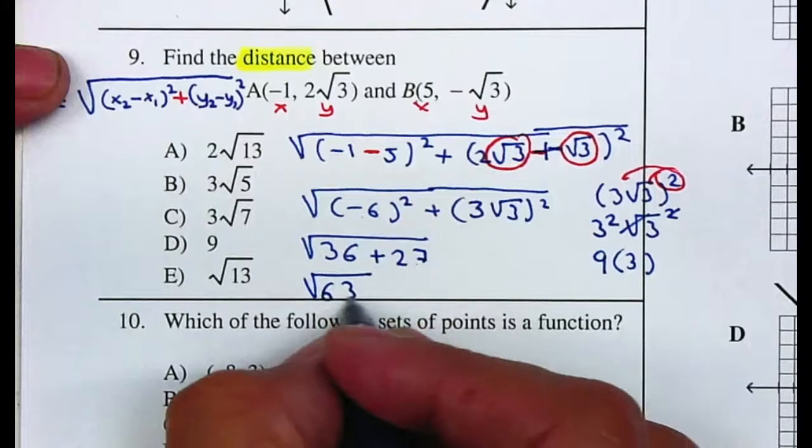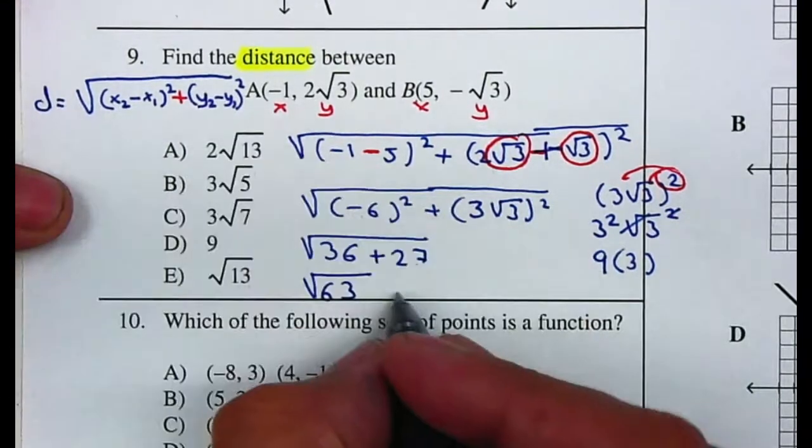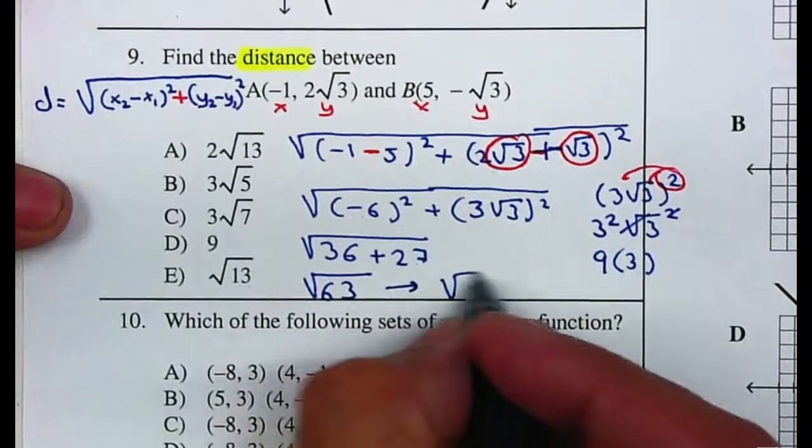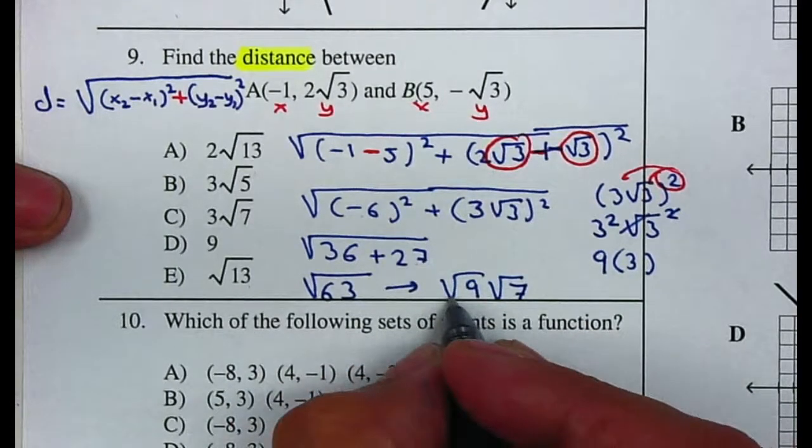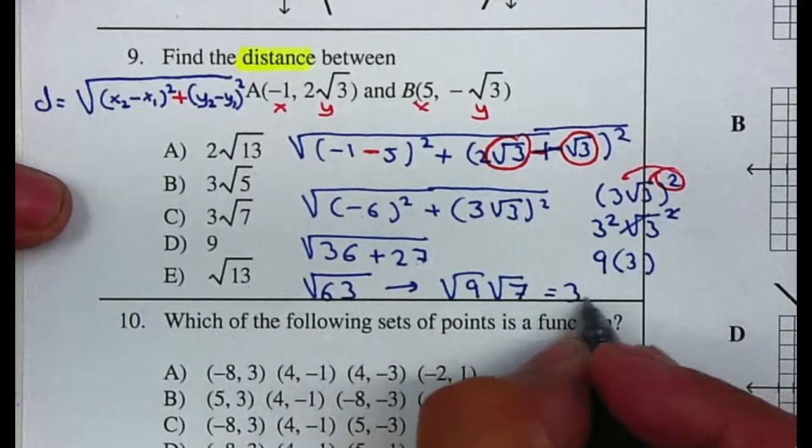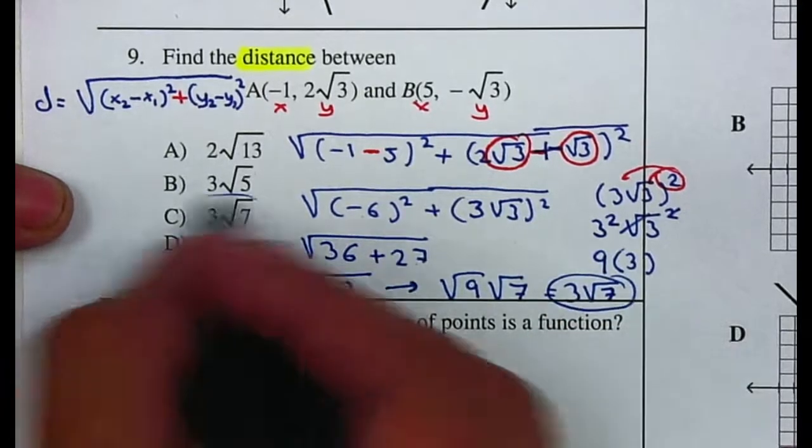I can simplify this. If you notice the answer is not there, but I can simplify as √9 times √7. The square root of 9 will give me 3, and the square root of 7 will stay by itself, so your answer is letter C.